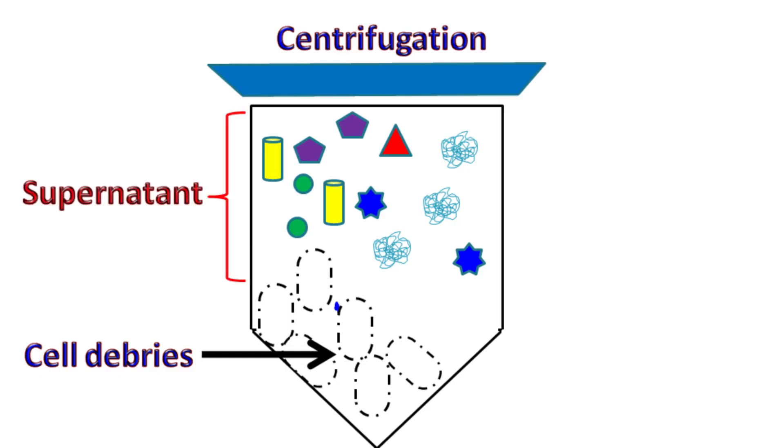The supernatant obtained after centrifugation has proteins and presence of nucleic acids like DNA and RNA.